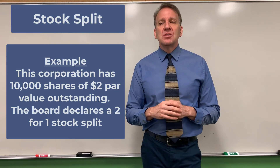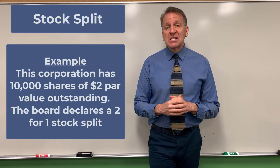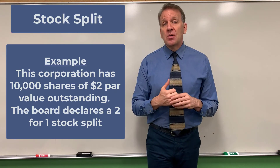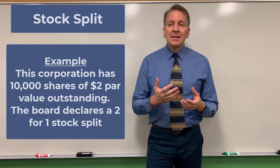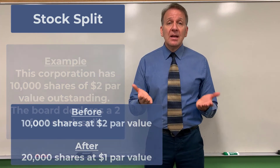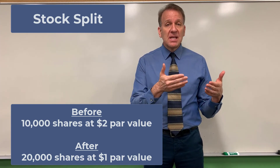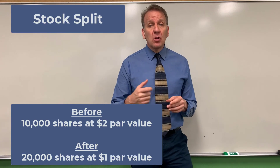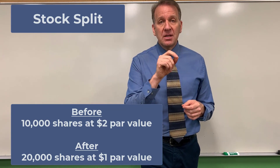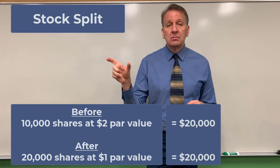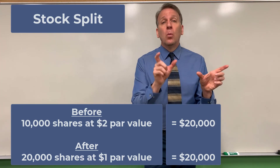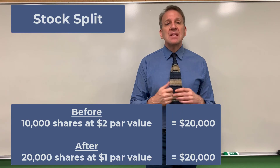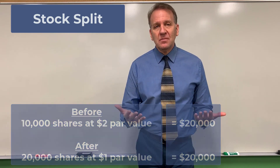We have 10,000 shares at $2 par value per share. After the stock split, nothing changes in our equity section in terms of dollar amounts. The only things that change are the number of shares outstanding and the new par value. We now have 20,000 shares, so the par value must be cut in half to $1. The total common stock value was 10,000 shares times $2, or $20,000 — and after the split it's 20,000 shares times $1, still $20,000. All that's happened is shareholders received additional shares.